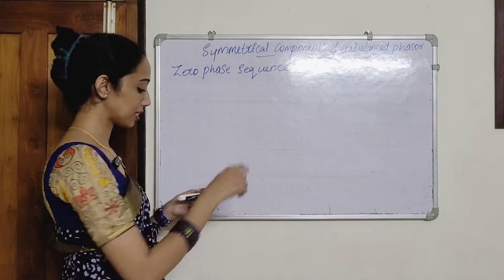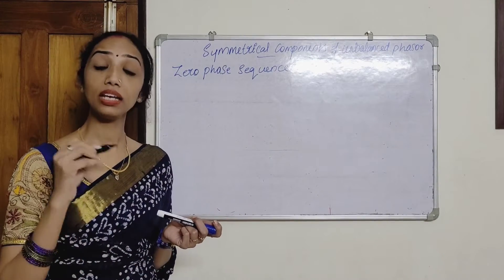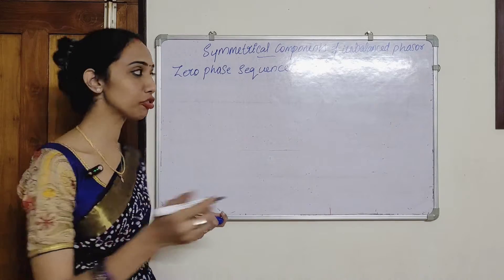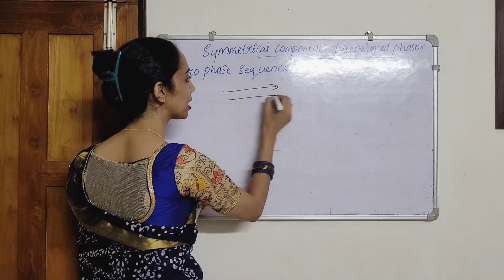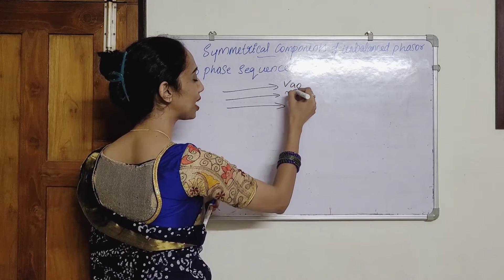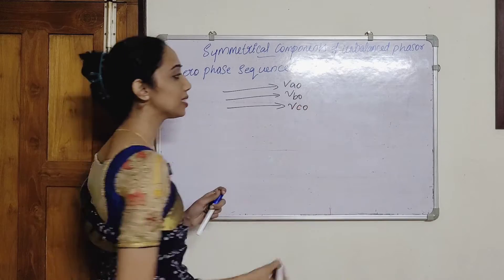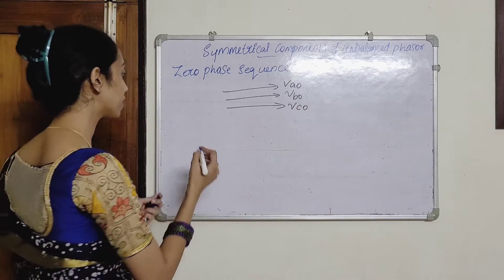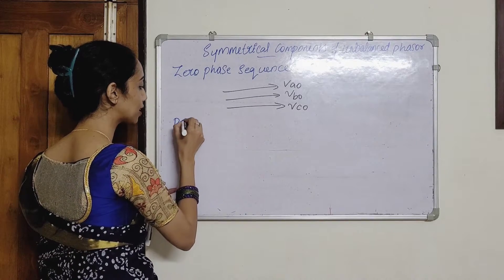Let's set up the zero phase sequence. It is in phase — same phase — we have zero phase shift. So for the three vectors, we can write the values as VA0, VB0 and VC0. Then we can write the positive A sequence.